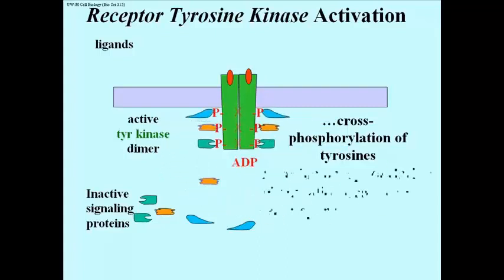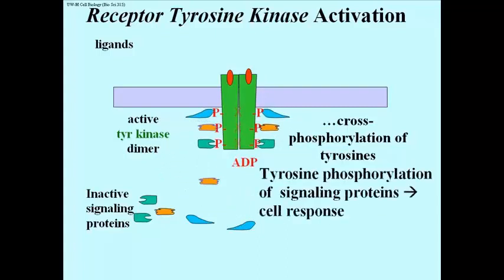When phosphorylated, the entire hormone receptor complex acts as a protein kinase to phosphorylate intracellular proteins binding to the activated receptor, thereby transducing the signal information from the cell exterior into the interior of the cell, and generating ultimately an appropriate cellular response.